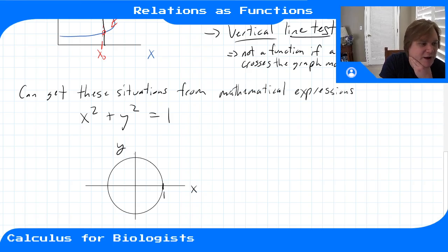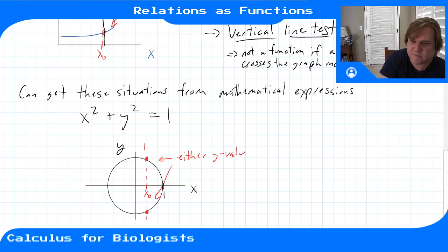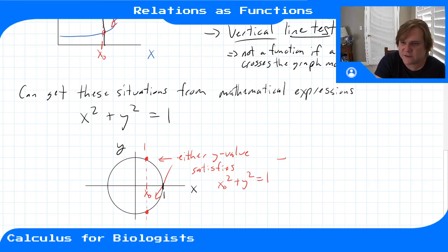So if we plot this circle in the x and y plane, if you take a particular x value, let's say we take this one, call that x zero - if this is our given x value, the vertical line test says either of these y values, here or here, would satisfy this equation. So this one and that one down there, either y value satisfies x zero squared plus y squared equals one. So this is also, that means this formula is not a function.